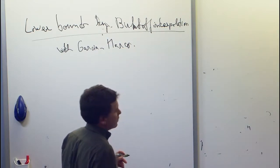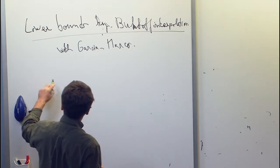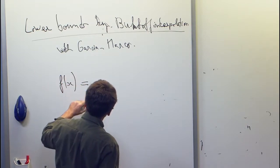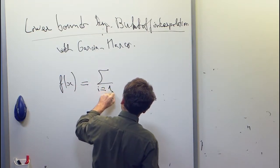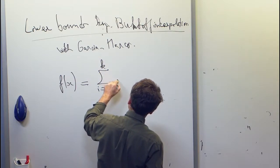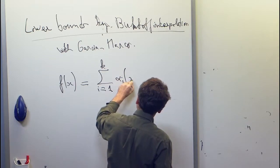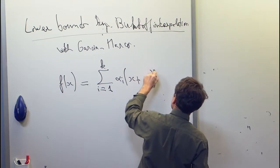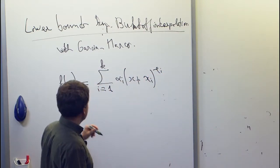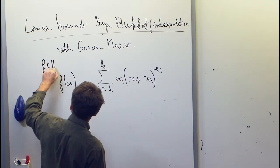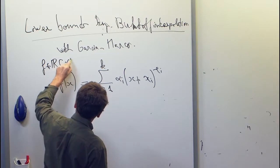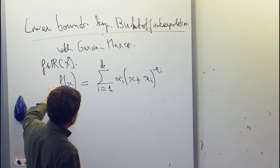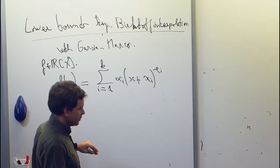This work is about a very simple model. We try to represent polynomials in one variable as sums of powers of degree 1 polynomials. So f is going to be a real univariate polynomial, and we want to have k, the number of terms, as small as possible.